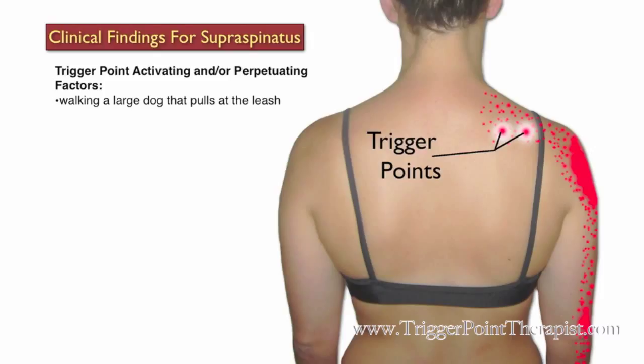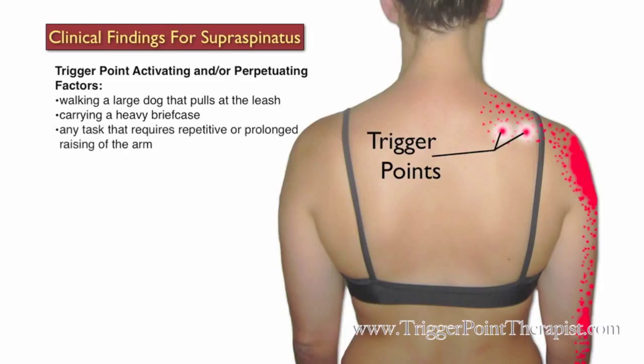Activating and perpetuating factors for the supraspinatus trigger points include walking a large dog that pulls on the leash, carrying a heavy briefcase, and any task that requires repetitive or prolonged raising of the arm.